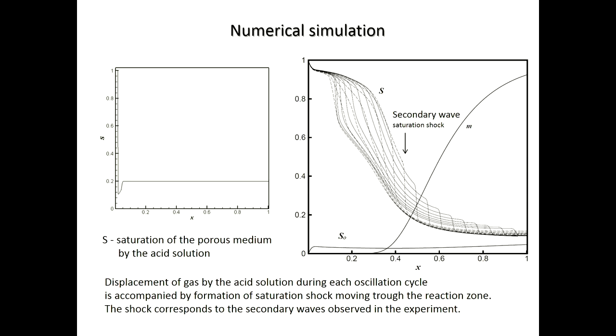Here we have the solution for the saturation versus distance. First, after injection started, the front propagates stably. But after some time interval, we have transition to the self-oscillating mode of the reaction front propagation. This is stable stage. Here we have oscillations.